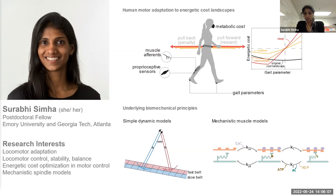I'm a postdoctoral fellow with Lena Teng at Emory University, where I'm working on using crossbridge models to understand muscle behavior and to predict muscle spindle firing. Eventually, I hope to use these models to understand motor control and motor learning, which is what I did during my PhD.